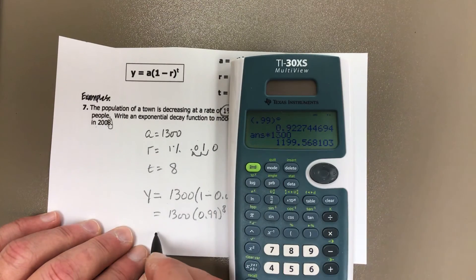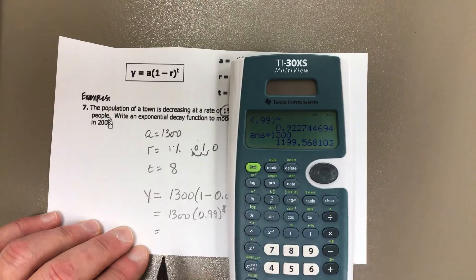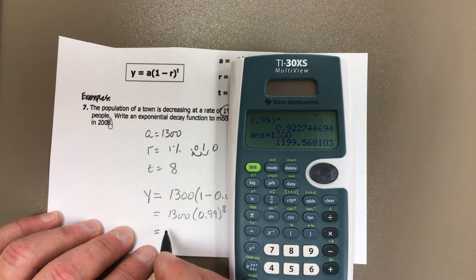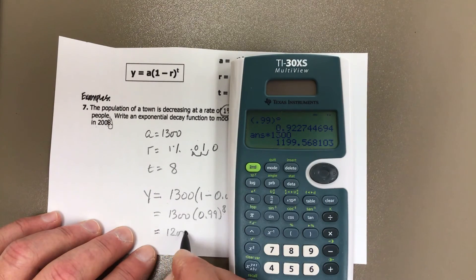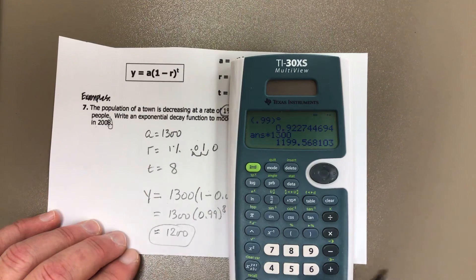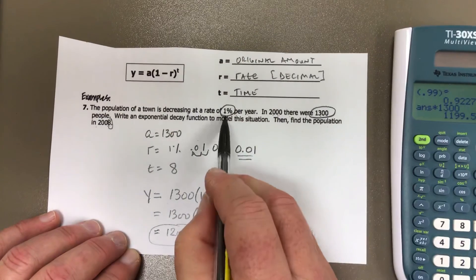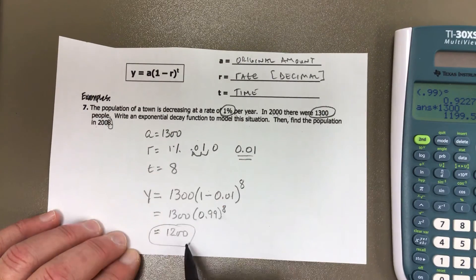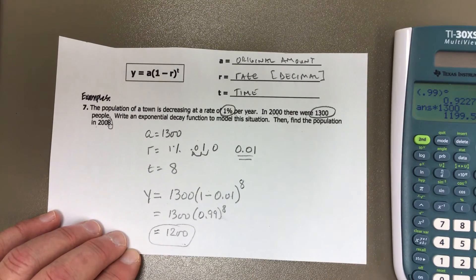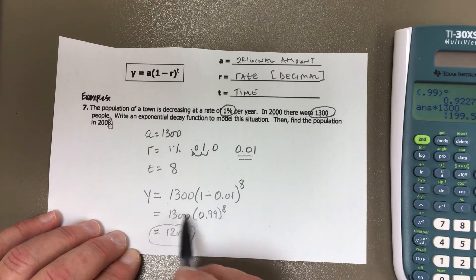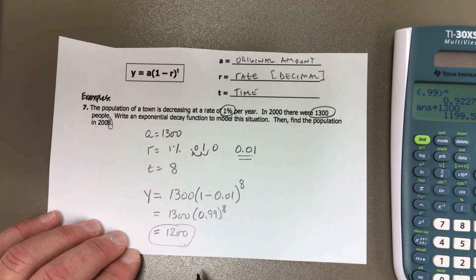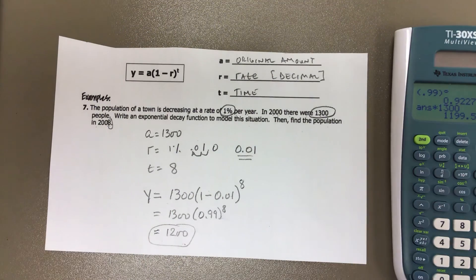So now this is people, so we have to round up here. So it looks like it's going to be just basically about 1,200 people. So the population is decreasing by 1%. In eight years, it's going to be from 1,300 down to 1,200. Most of the time you just throw this into your calculator and you're going to be done. All right, cool. Keep working hard.